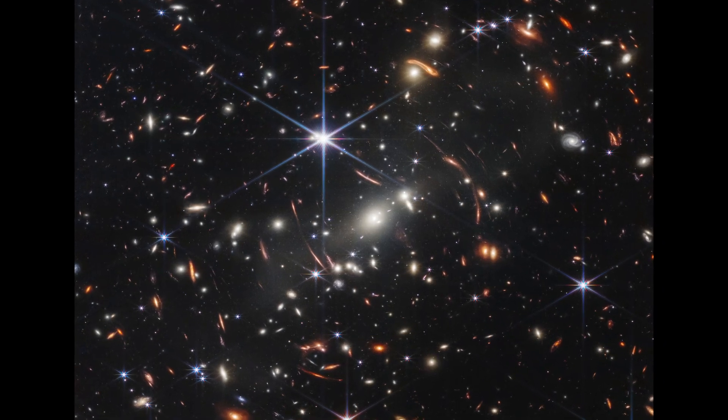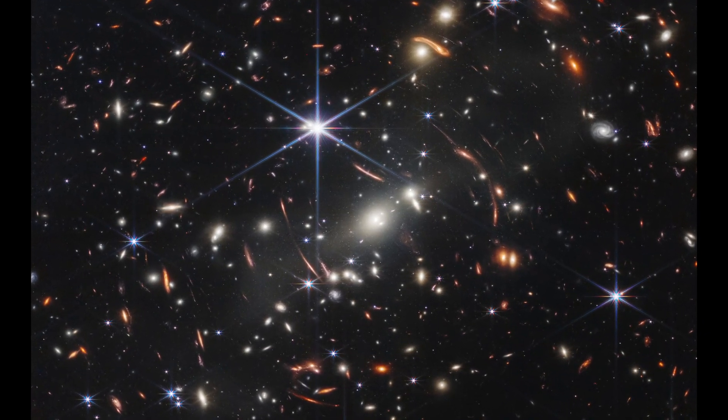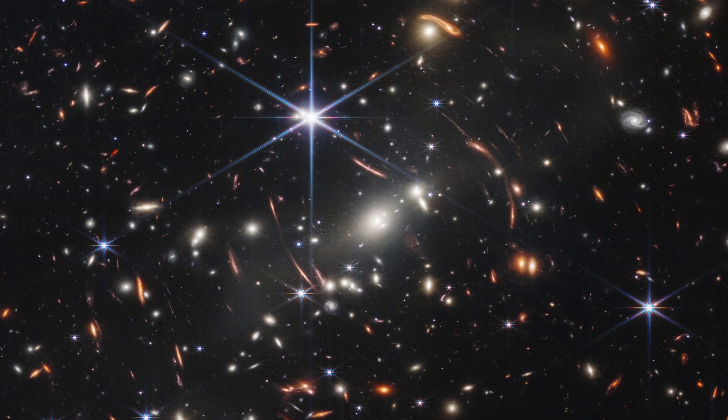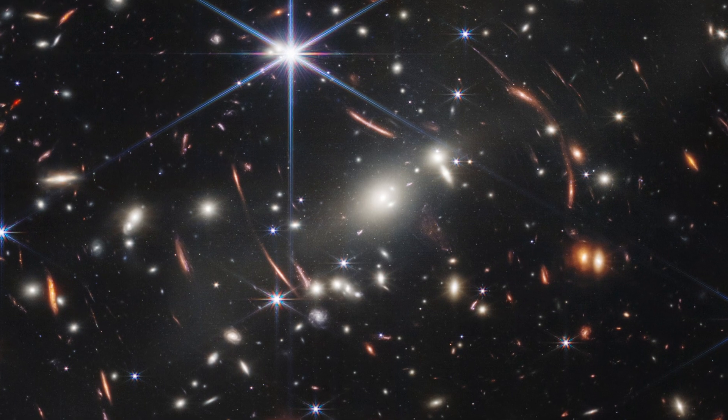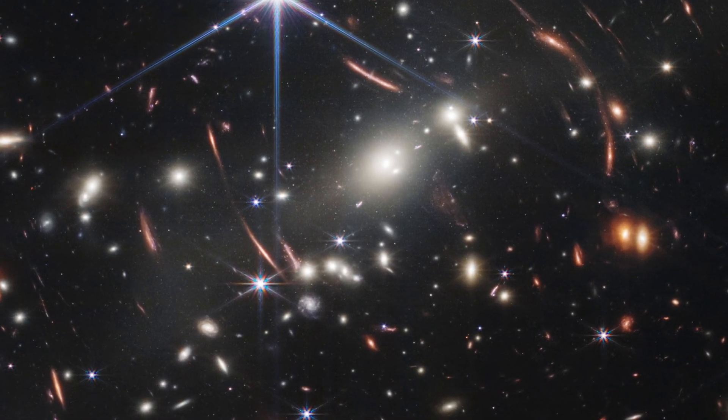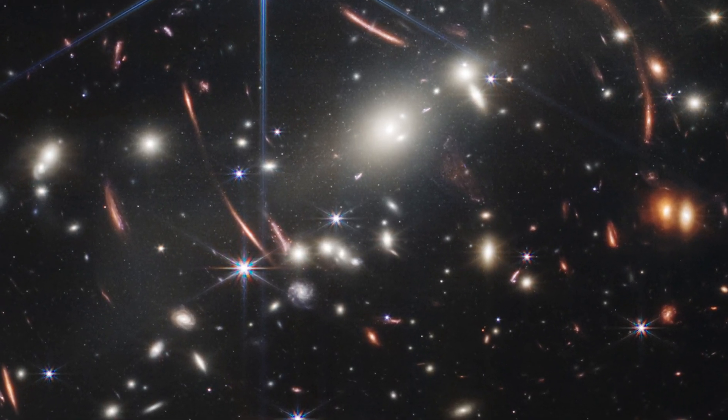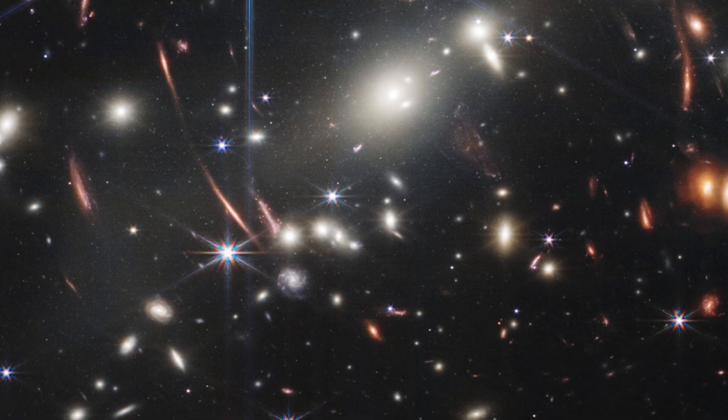This image of SMACS 0723, the galaxy cluster known as Webb's first deep field, is full of detail. Thousands of galaxies, including the faintest objects observed in the infrared, appeared for the first time in Webb's field of vision.